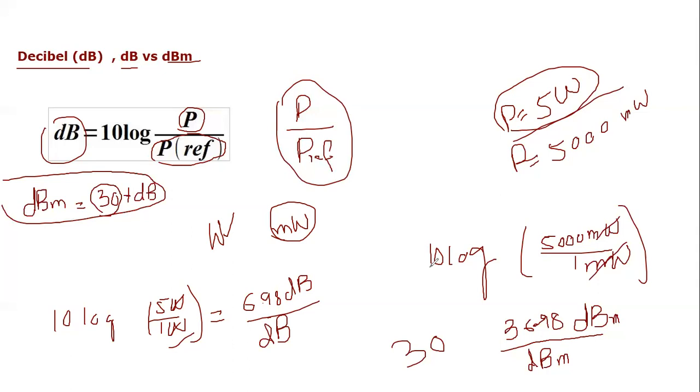So that is why this 30 factor comes up. For the generally known formula, you can simply say that you need to add 30 to dB or subtract 30 from dBm value to evaluate the dB value.